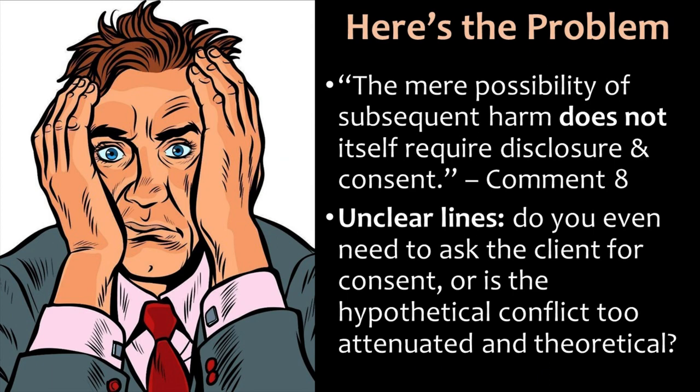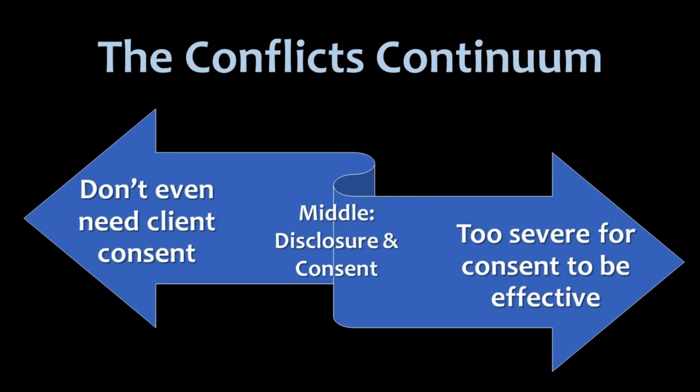The next sentence from Comment 8 highlights one of the main problems with conflicts of interest generally, and especially with material limitation conflicts. It says: the mere possibility of subsequent harm does not in itself require disclosure and consent. Note that there are unclear lines here — do you even need to ask the client for consent, or is the hypothetical conflict too attenuated and theoretical to matter? You can think of this as a continuum or spectrum of conflicts. At one extreme, there are situations where the conflict is so trivial or attenuated or theoretical that it's not even worth bringing up with the client — meaning you don't even need to ask for consent.